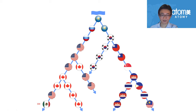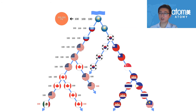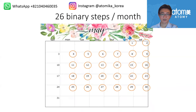Say a person from Mexico on your left leg bought something for 100,000 PV. That is their personal PV, but it's also the group PV of all partners above them — including Americans, Canadians, Russians, and you. Similarly, if an American partner bought 100,000 PV, it also flows upward. The Canadian's purchase adds more, giving you 300,000 group PV on your left side. The same applies to your right leg.